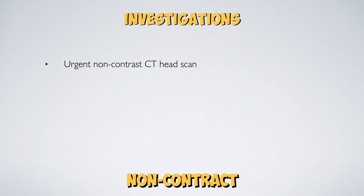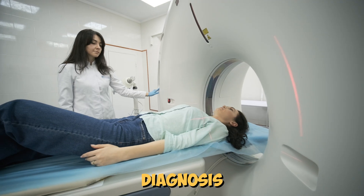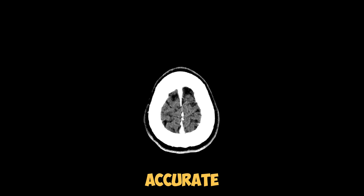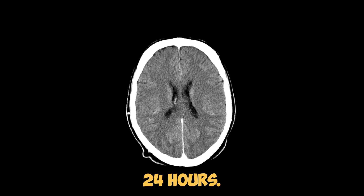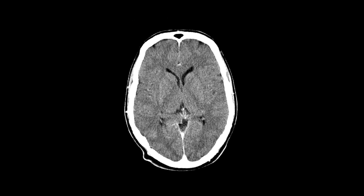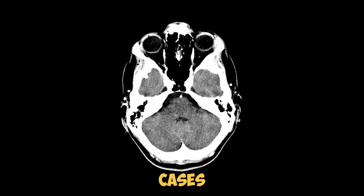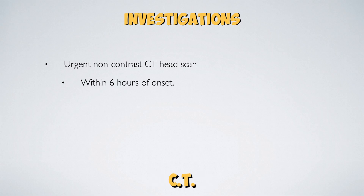An urgent non-contrast CT head is the gold standard imaging modality for the diagnosis of subarachnoid haemorrhage. CT imaging is highly accurate and will diagnose 93% of cases if done in the first 24 hours, but CT will identify nearly 100% of cases if performed within 6 hours. So ideally, CT head should be performed within 6 hours of the onset of symptoms.